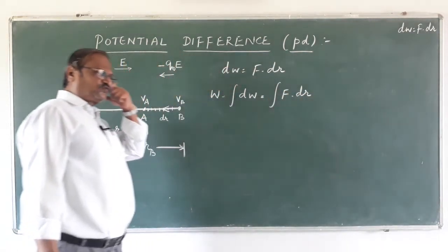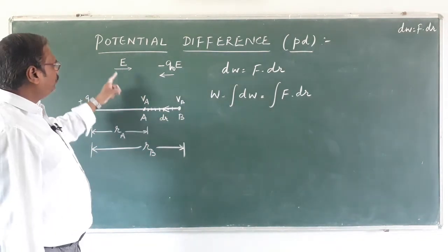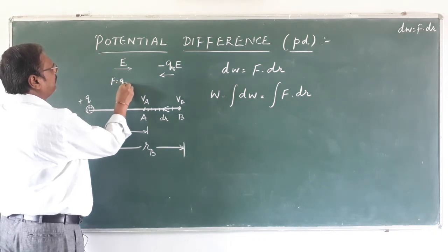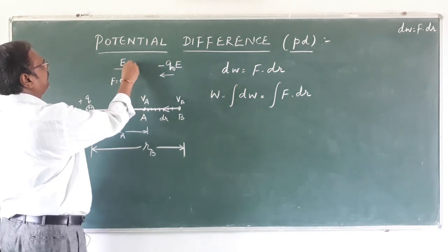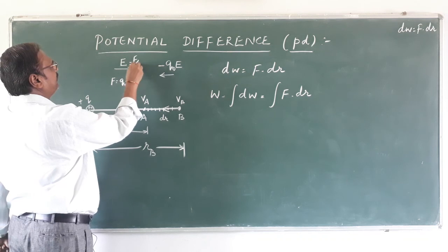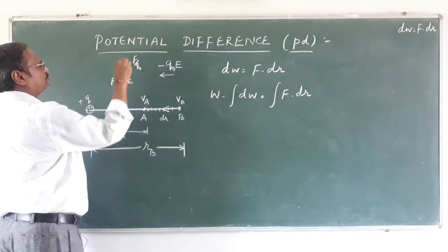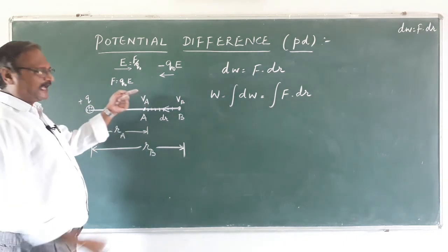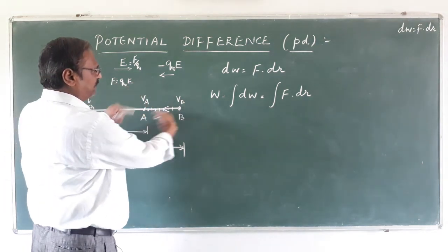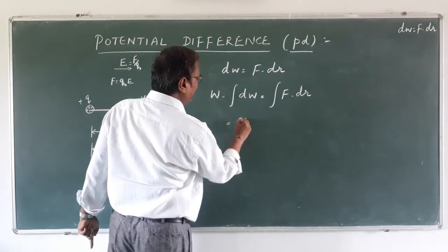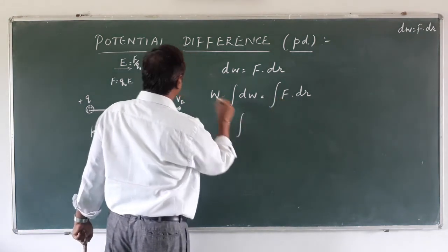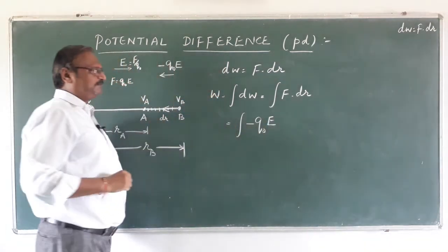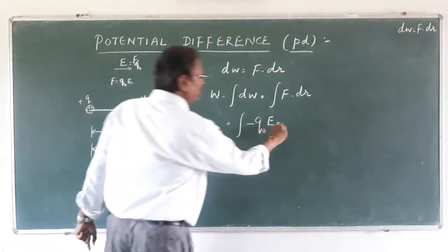Now, force in terms of electric field is F = q₀E, because electric field is equal to the force acting on a unit positive test charge. However, the force is acting in one direction but we are doing the work in the opposite direction, so we write minus q₀ into E into dr.